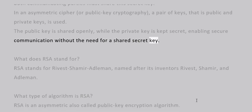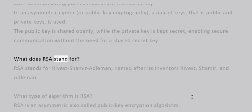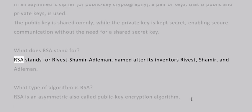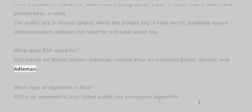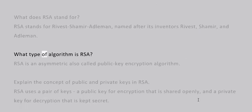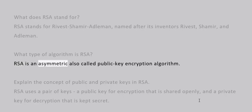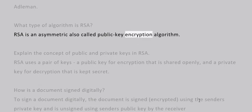What does RSA stand for? RSA stands for Rivest-Shamir-Adleman, named after its inventors Rivest, Shamir, and Adleman. What type of algorithm is RSA? RSA is an asymmetric, also called public key, encryption algorithm.